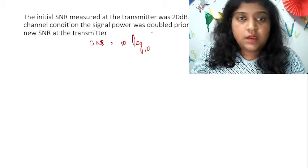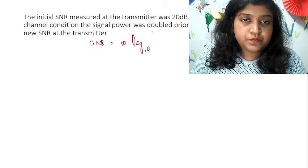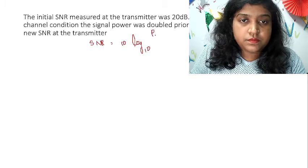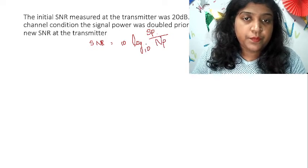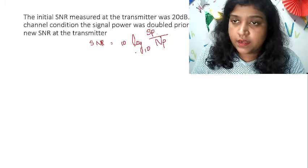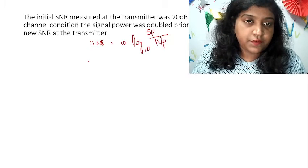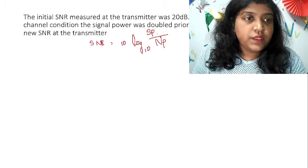Here in the formula, this is signal power SP divided by NP. We can take it like that.